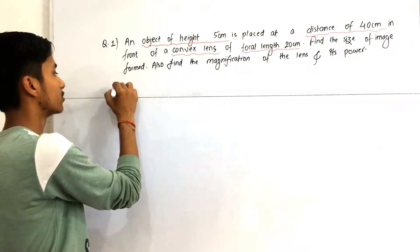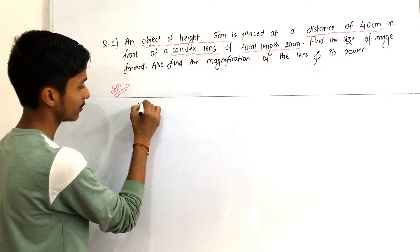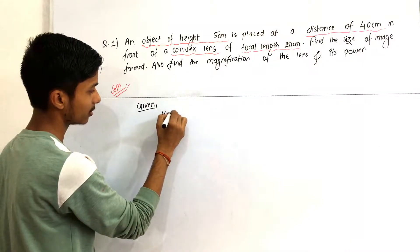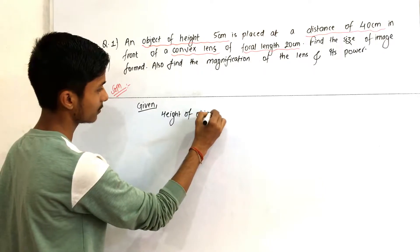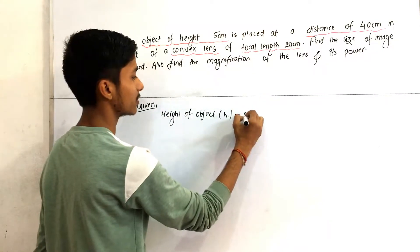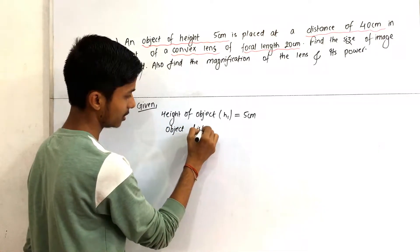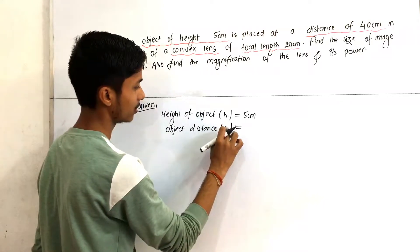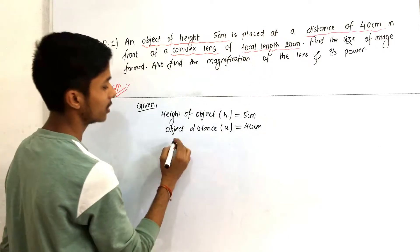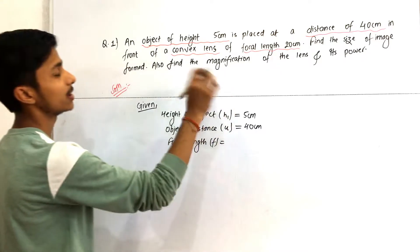We write the solution. Given: height of object h1 = 5 centimeter, object distance u = 40 centimeter, and the lens is a convex lens of focal length f = 20 centimeter. We let the image distance be v.